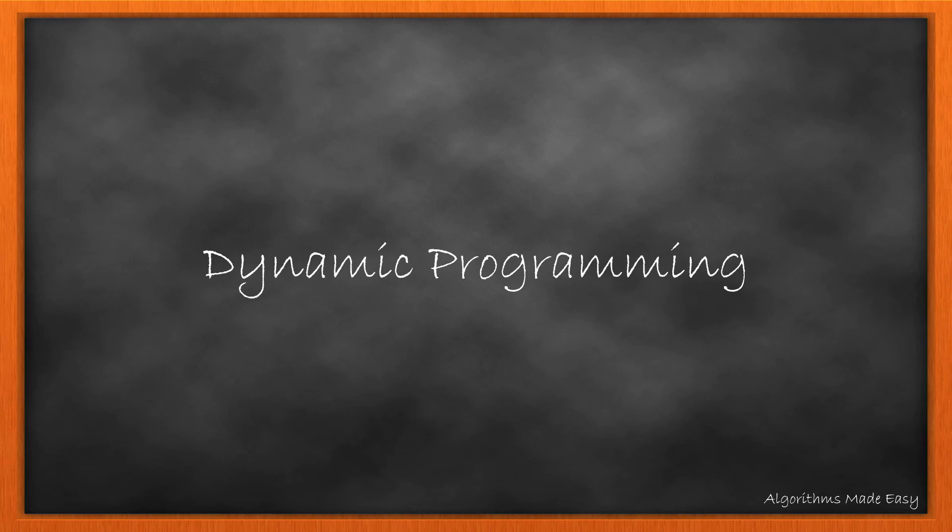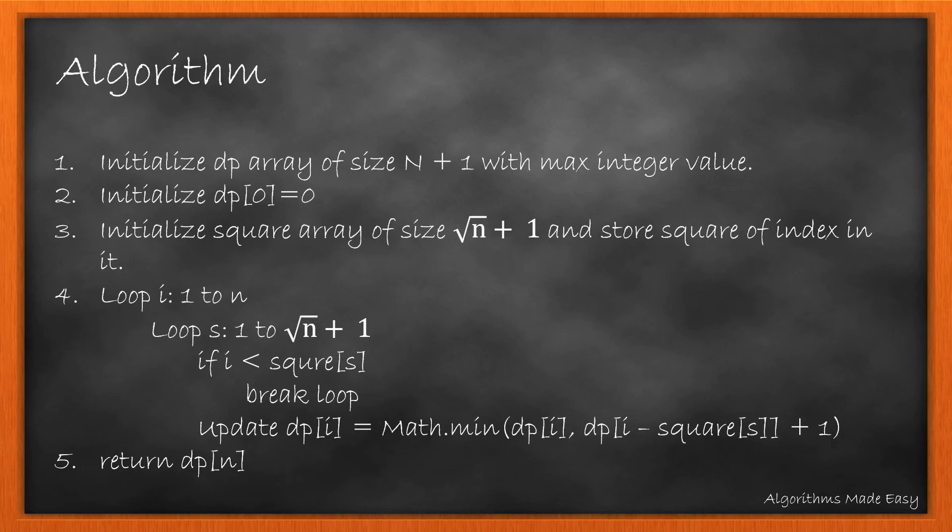Let's see the dynamic programming approach to the problem. The algorithm will look like this. For step 1 to 3 we will initialize two arrays: one of size n plus 1 with max integer values, and the other of size square root of n plus 1 with square index as value.